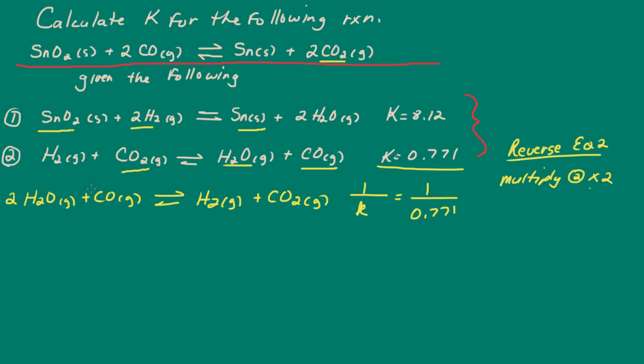So we'll put a 2 in front of... Okay, so we've multiplied the equation by 2. Now, because I multiplied the equation by 2, now K is going to be squared.